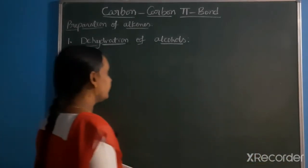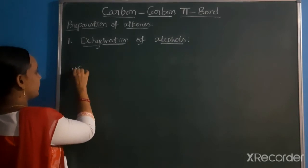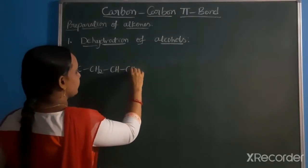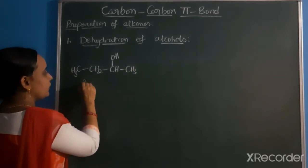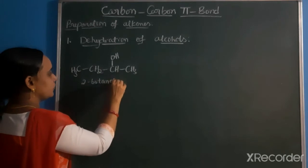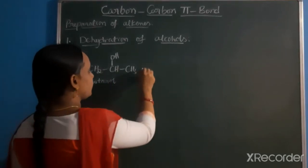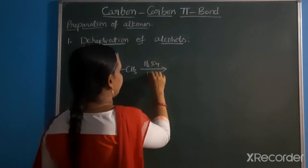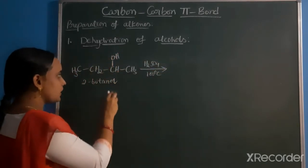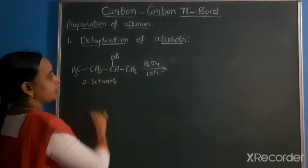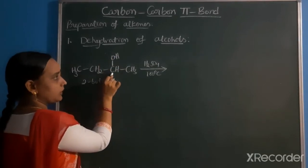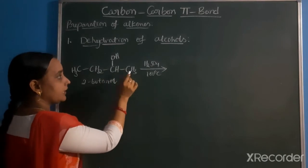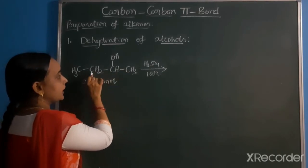For unsymmetrical secondary or tertiary alcohols, consider CH3-CH2-CH(OH)-CH3, which is 2-butanol. Using H2SO4 at 100 degrees centigrade with high temperature, the OH is eliminated. The carbocation forms, and then hydrogen can be eliminated from either adjacent carbon to form a double bond.